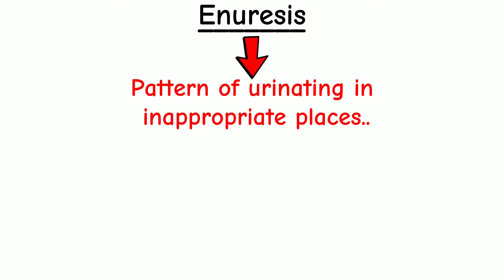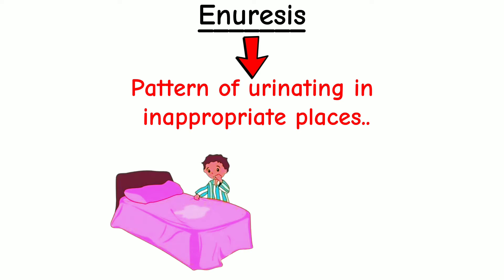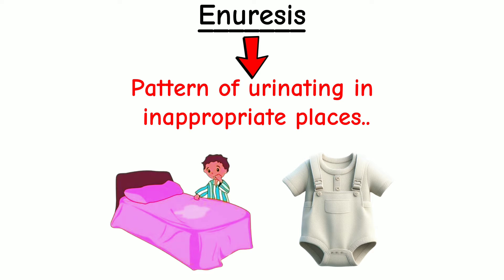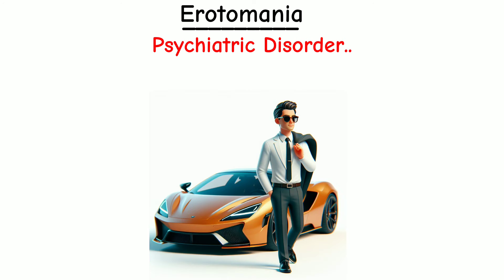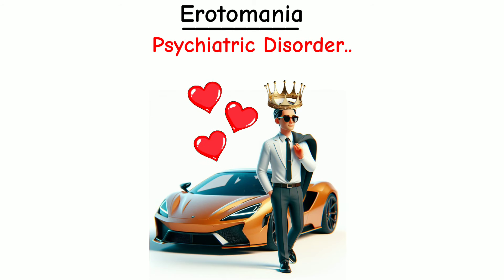Enuresis is a pattern of urinating in inappropriate places, such as in bed or into clothes, after the age of 5 years old. Erotomania is a psychiatric disorder characterized by the delusional belief that another person, usually of higher social status, is profoundly in love with the affected individual despite no evidence or reciprocation.